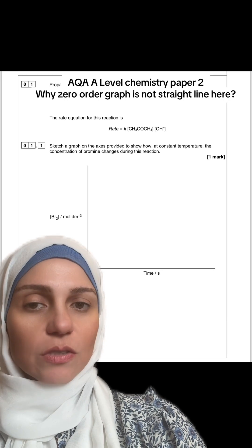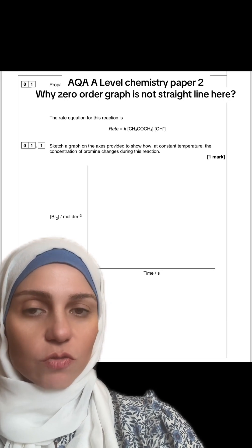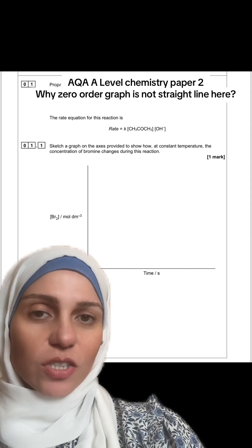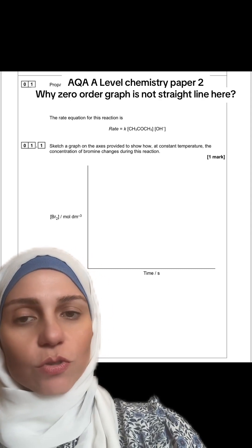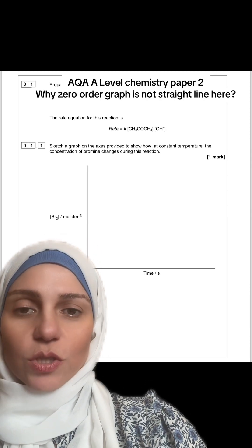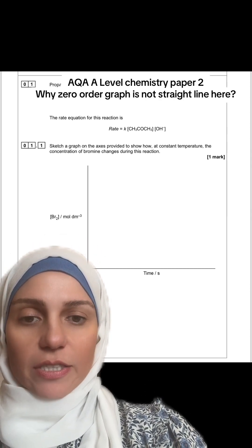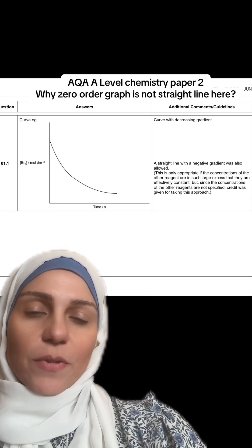Here they wanted you to draw the change in the concentration of bromine with time, while the rate equation indicates that it's zero order in terms of bromine. So you would expect the graph to be a straight line with a negative gradient. When you look at the marking scheme,